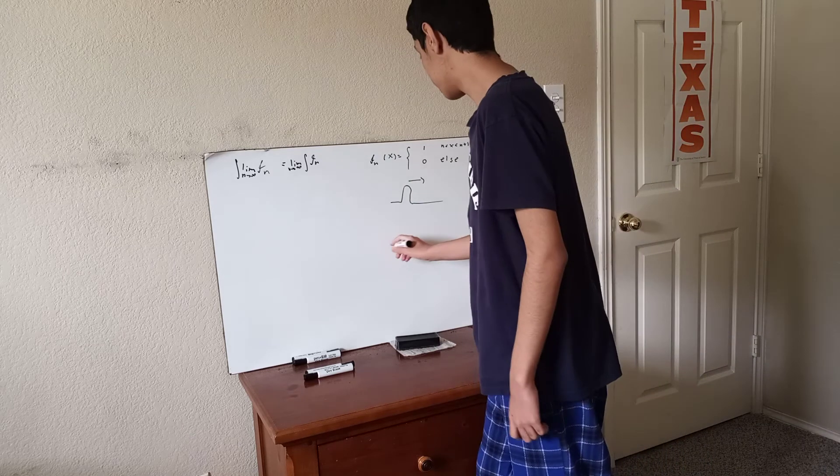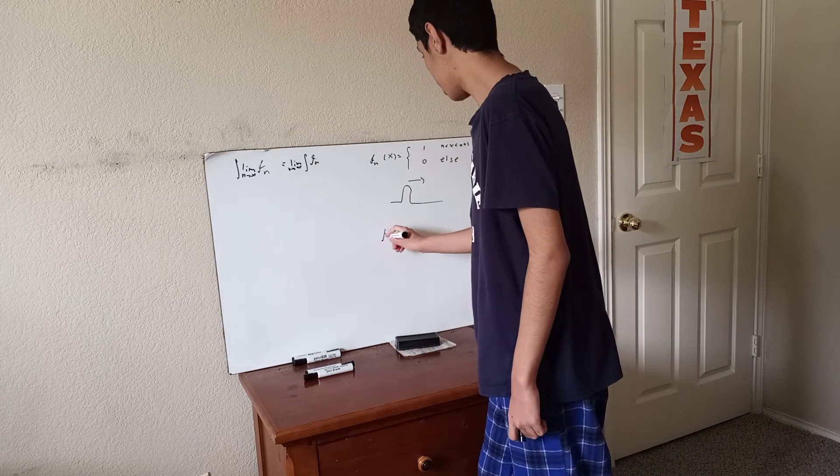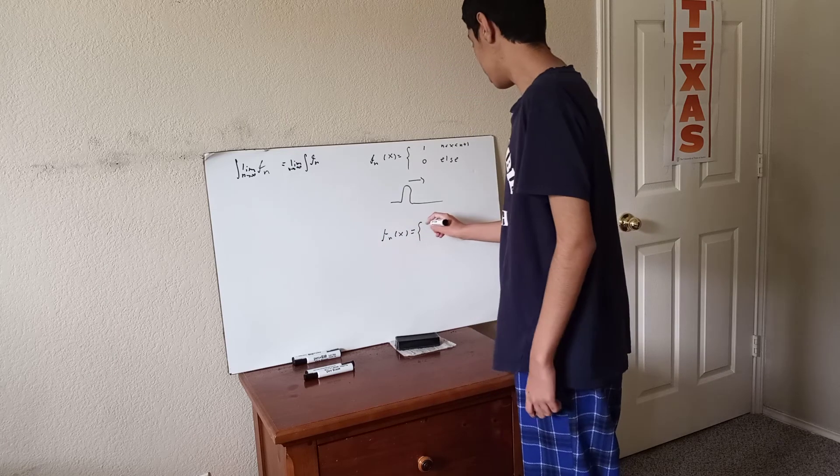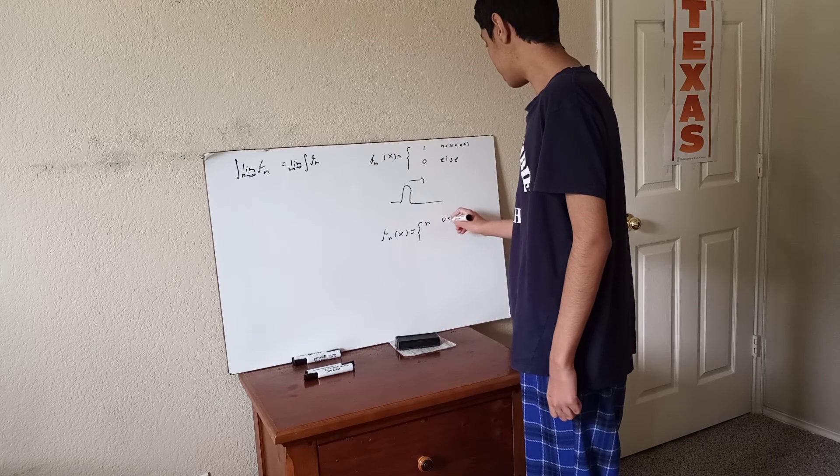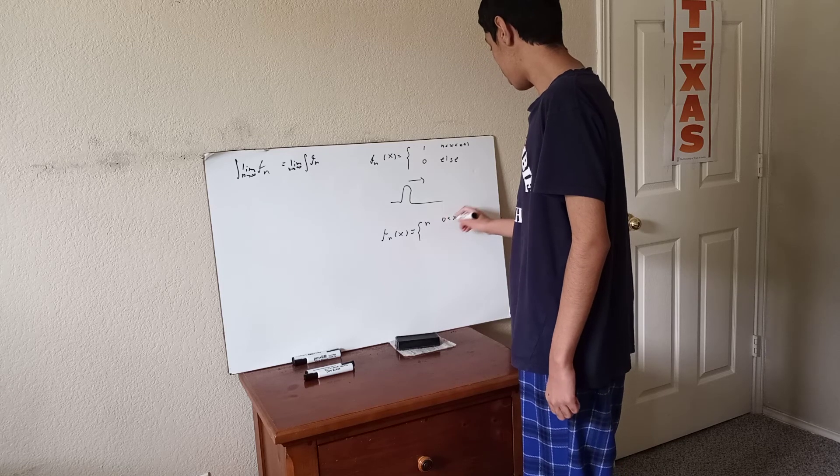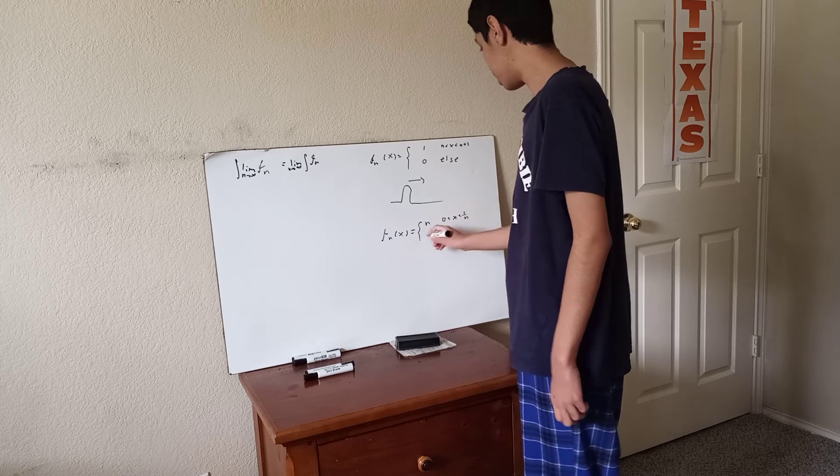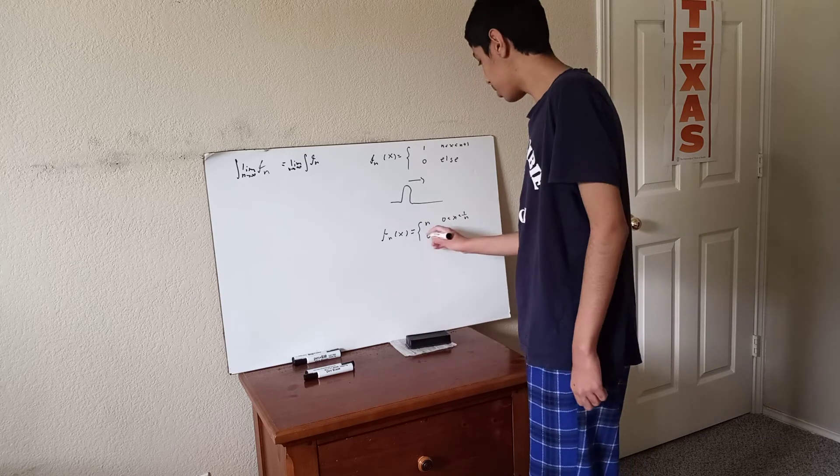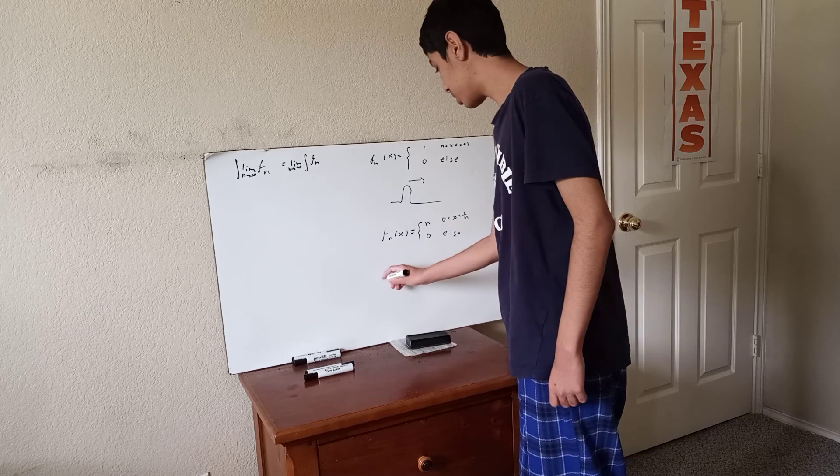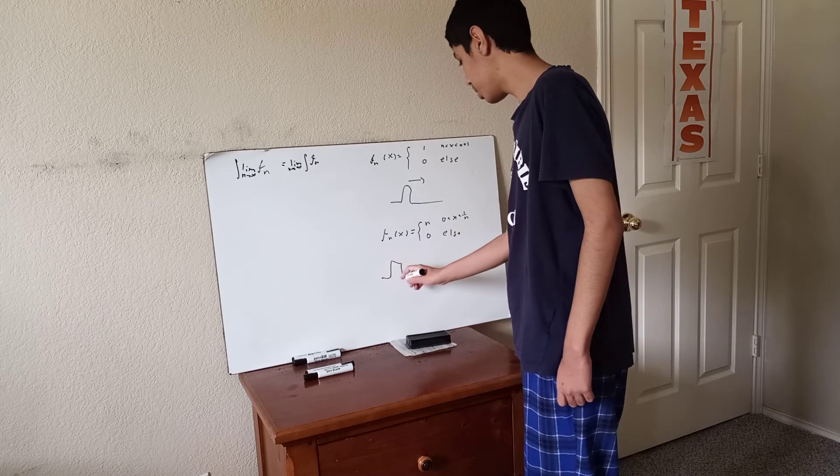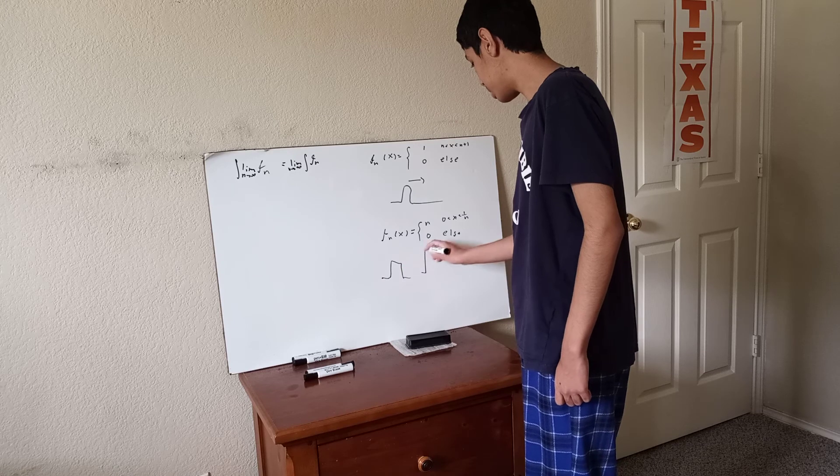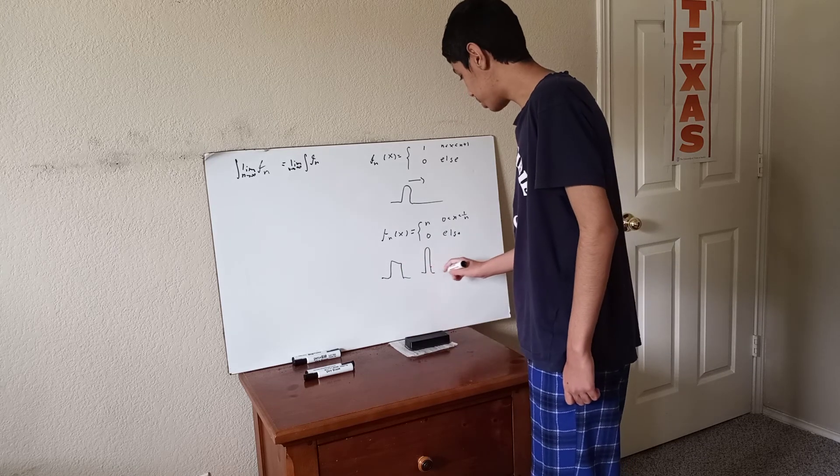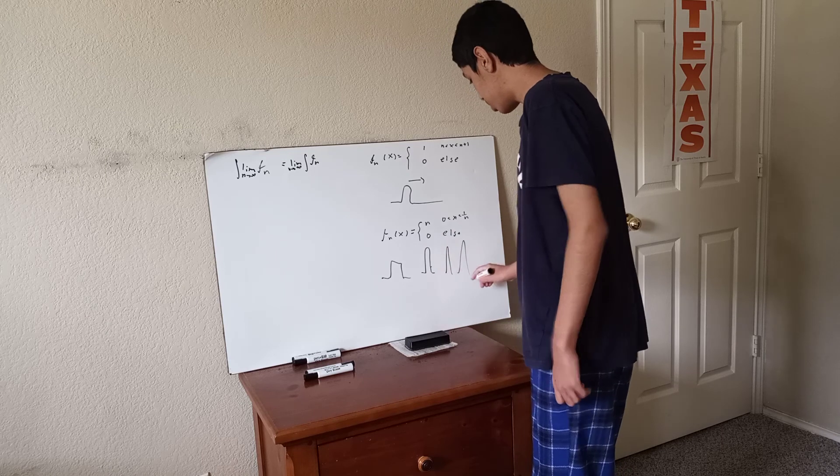Another function is, it's equal to n when x is between 0 and 1 over n, and it's equal to 0 otherwise. And here, this function basically starts off with a bump, and then it's a bump that's twice as tall but also twice as narrow, and it keeps on getting taller and narrower and spikier.